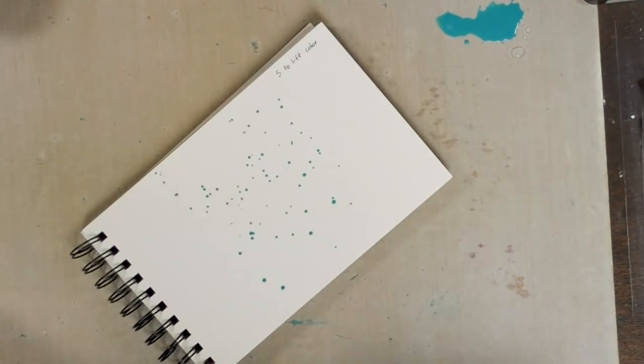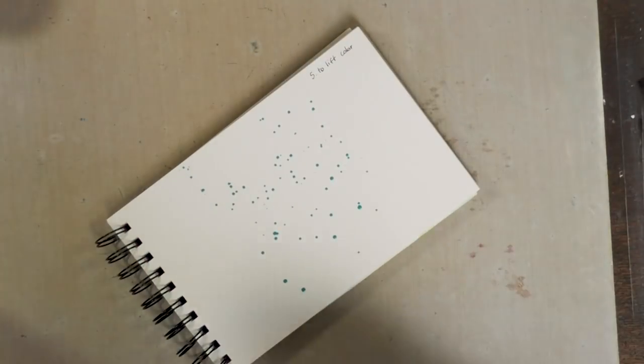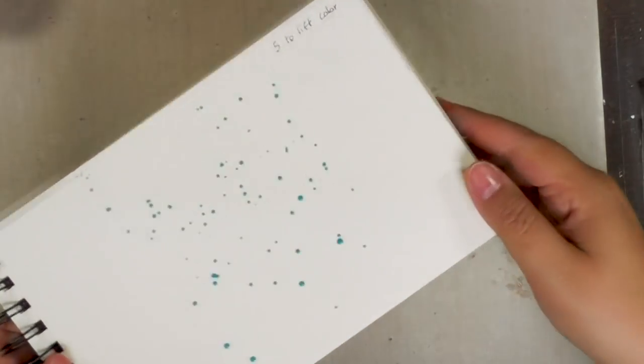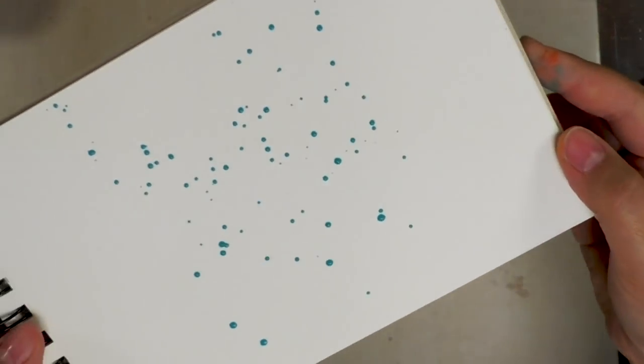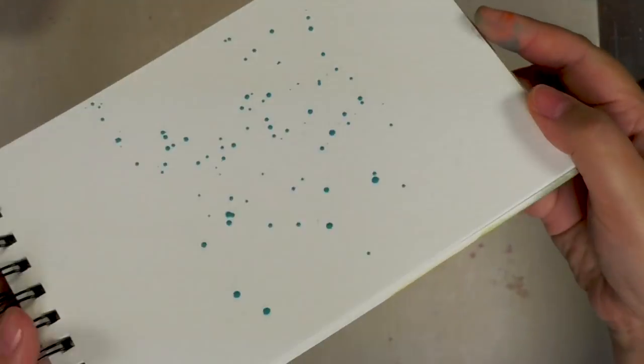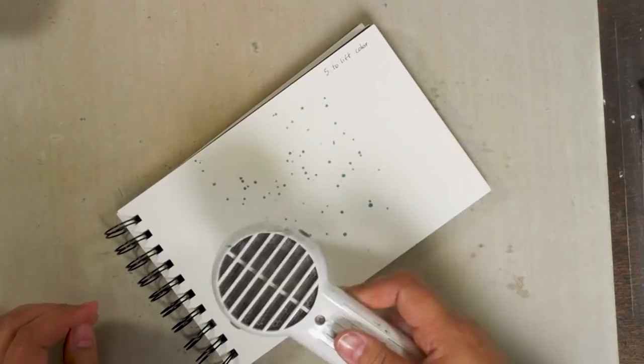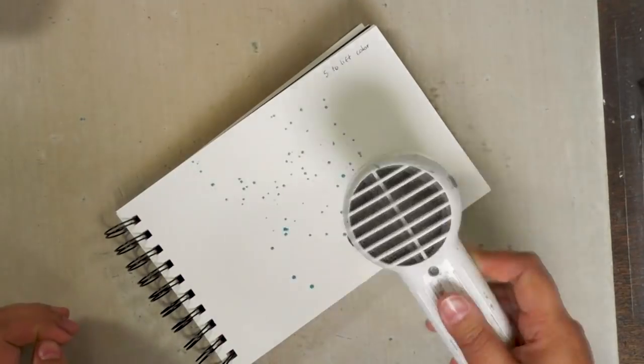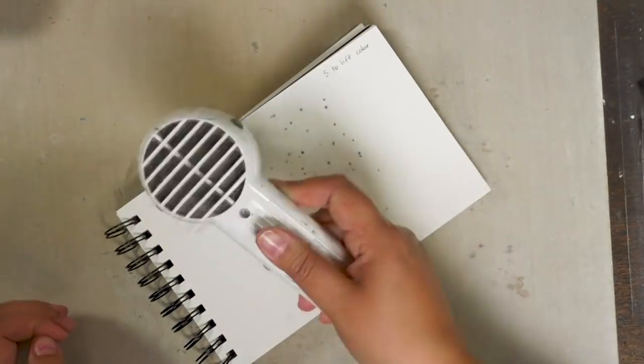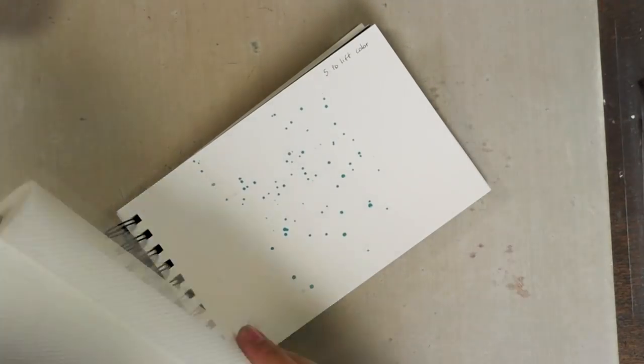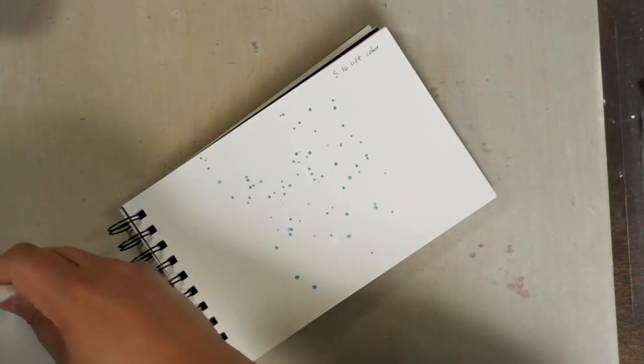So often when we add splatters, if we just leave them to dry like that, they're pretty intense, pretty much in your face. To soften them down, I just dry them halfway.